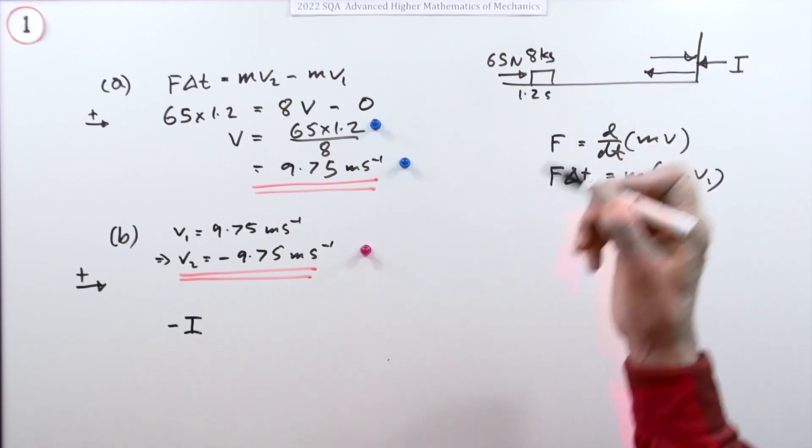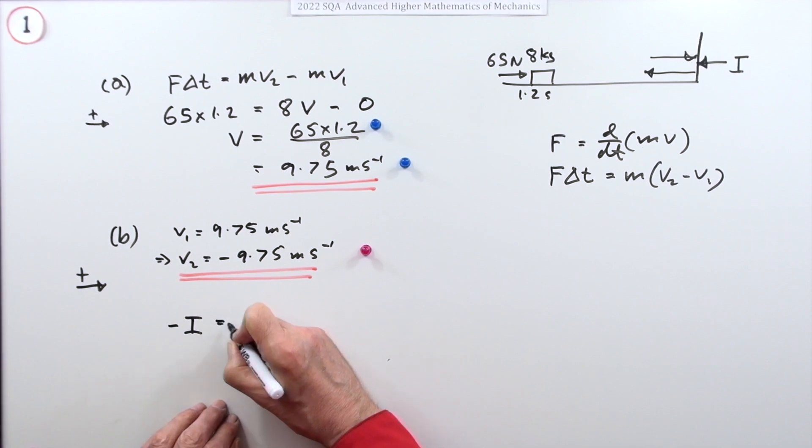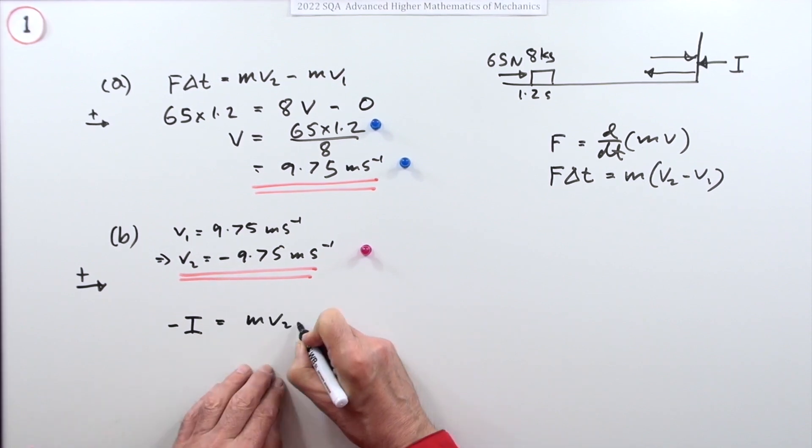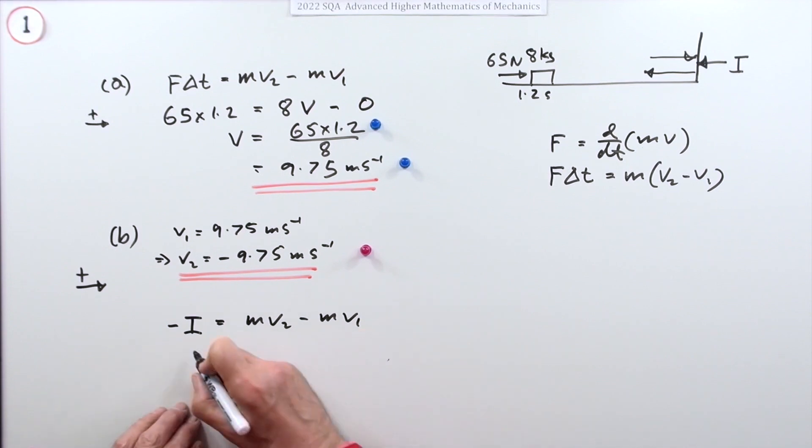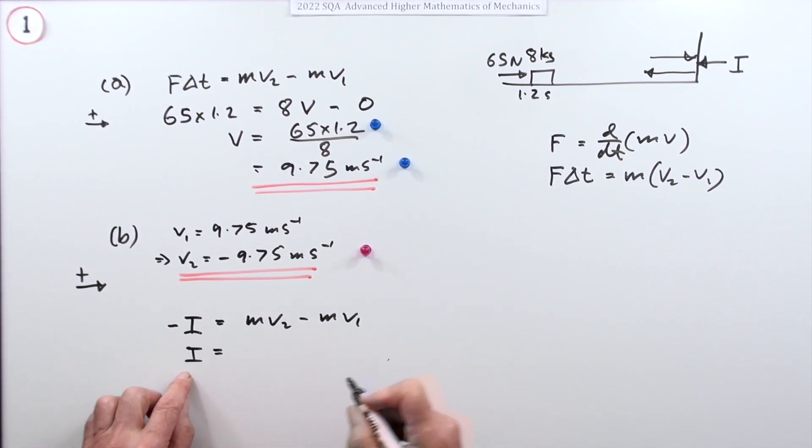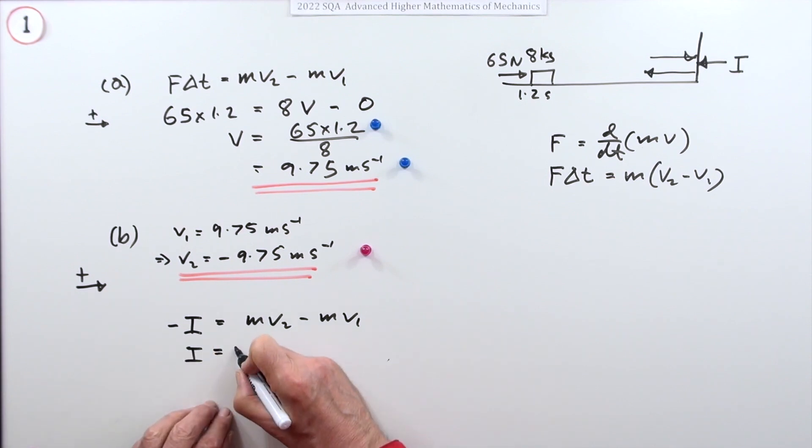Negative I is going to be m v2 minus m v1. So just flip those signs. So the actual I itself, the impulse you're looking for, will be—flip all the signs over—that'll be m times, but this time it'll be v1 minus v2.